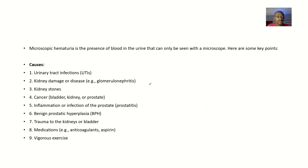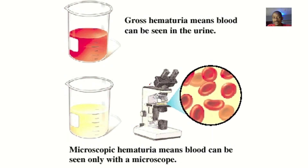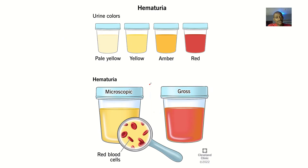We'll be talking about the possible causes, the definition, how we can detect microscopic hematuria, how we can suspect it exists, and a possible management of this condition. Microscopic hematuria is the presence of blood in urine that can only be seen with a microscope.